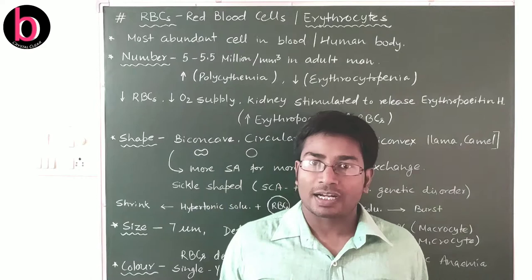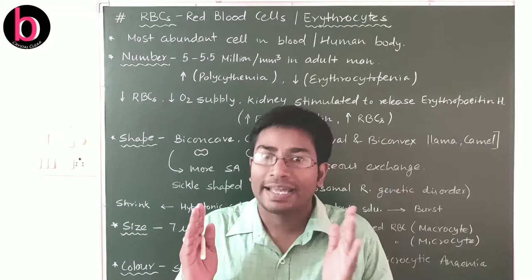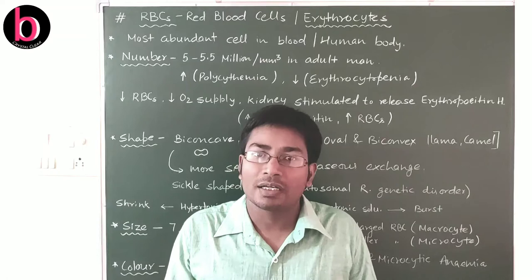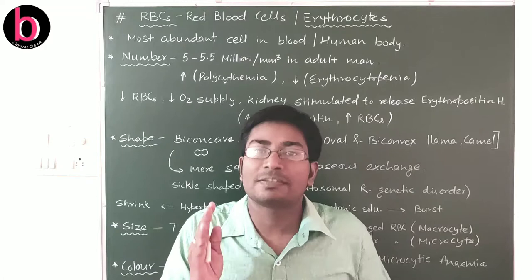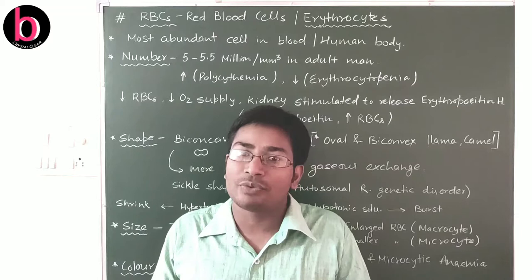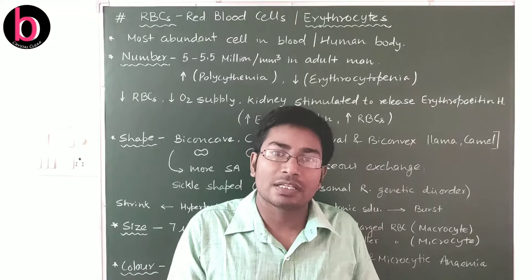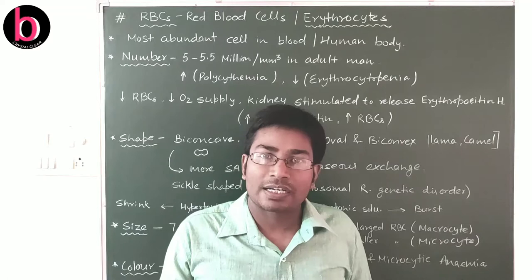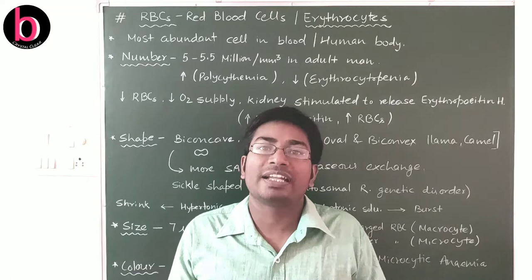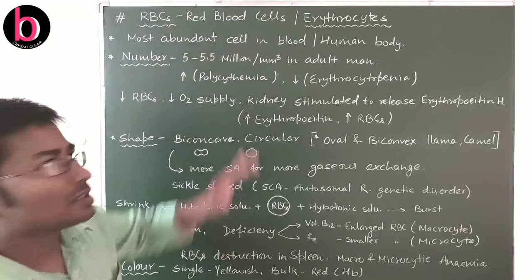In this video lecture we will discuss about red blood cells or erythrocytes. In the previous lecture we discussed blood as the liquid connective tissue of our body, with two components: plasma, the liquid component at nearly 55% of total blood, and formed elements, the solid component at nearly 45%. Formed elements include three types: red blood cells, white blood cells, and platelets.